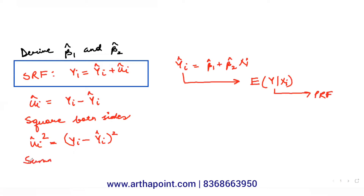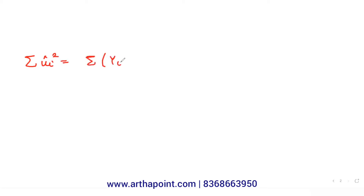Squaring both sides gives ui hat squared = (yi minus yi hat) squared. Summing both sides gives: summation of ui hat squared = summation of (yi minus yi hat) squared.